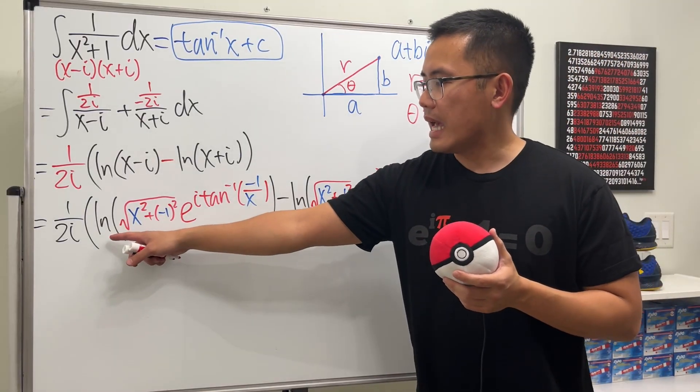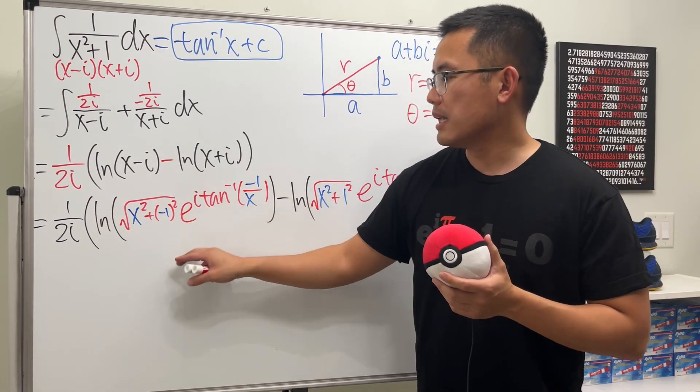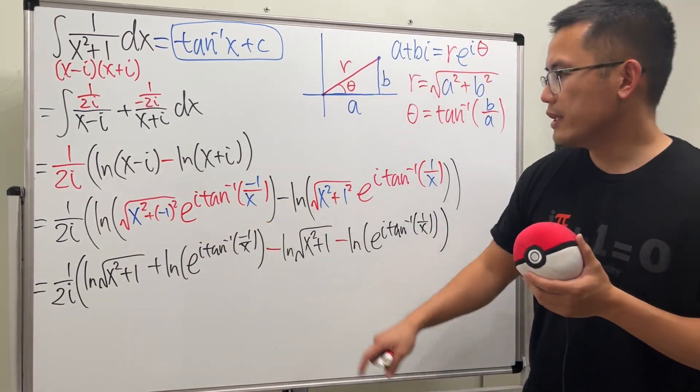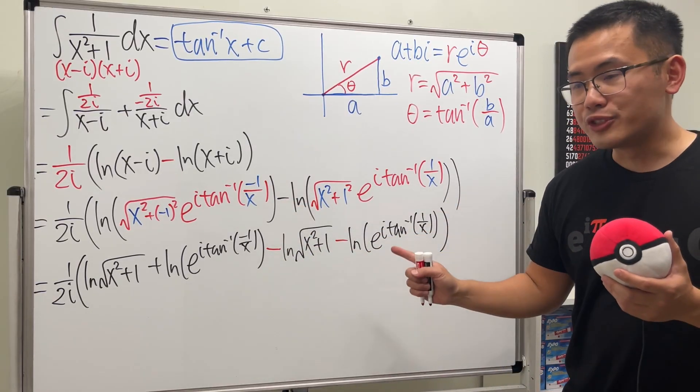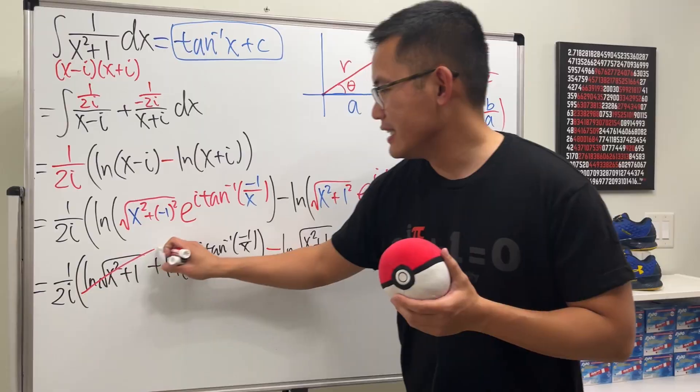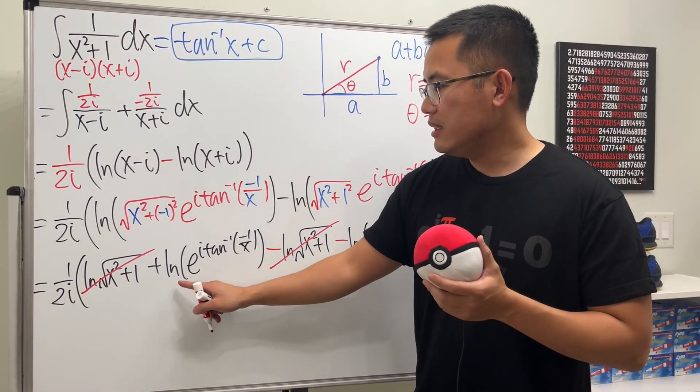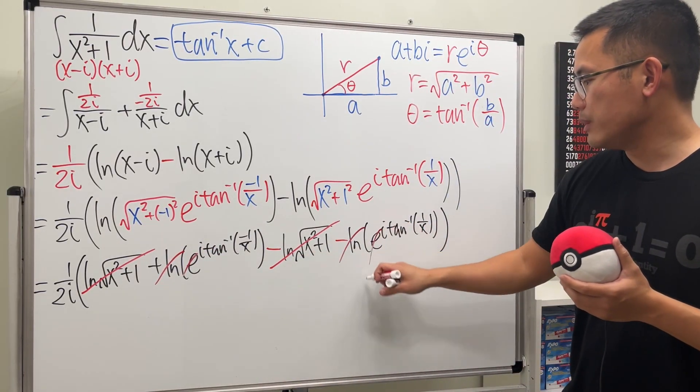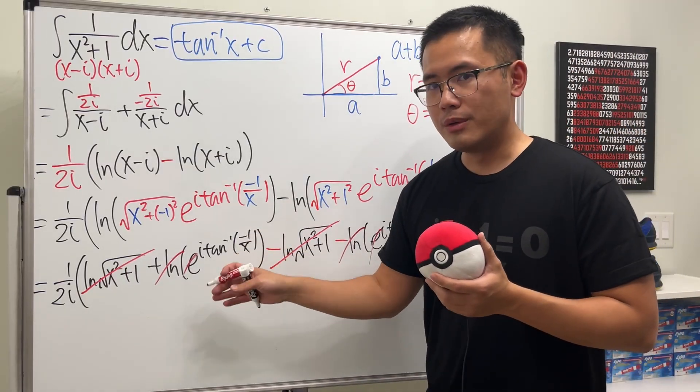Now, the good thing is that whenever we have the ln of a product, we can just break it apart as ln of this plus ln of that. So let's just go ahead and write it down. And then just be really careful. This is a subtraction. That's why it becomes subtraction and subtraction. Now, check this out. This and that cancel each other out. And then when we have e inside of the ln, of course, they also cancel each other out. And again, we're just looking for the principal value. All right. So we don't add the 2nπ.